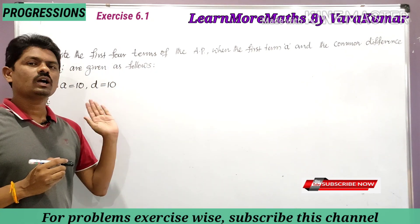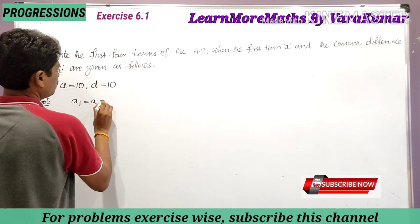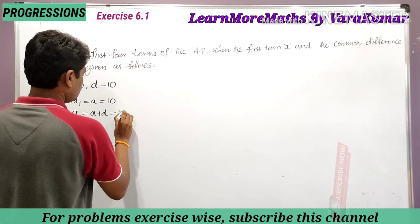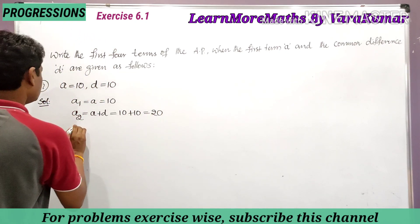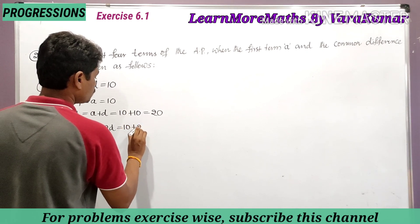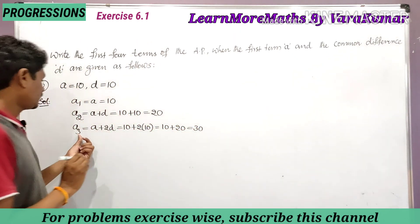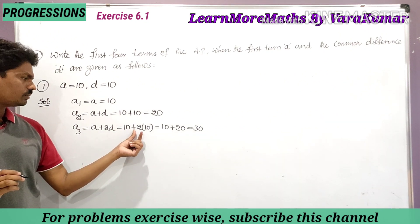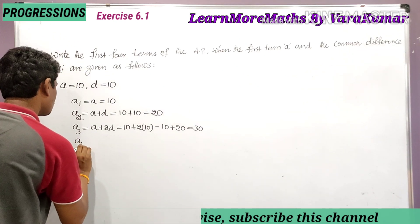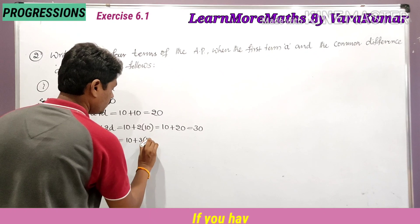The first four terms are a1, a2, a3, and a4. The first term a1 is equal to a, which is 10. The second term a2 is equal to a plus d, that is 10 plus 10, which is 20. The third term a3 is equal to a plus 2d, so 10 plus 2 into 10, which is 10 plus 20, equal to 30. The fourth term a4 is equal to a plus 3d, that is 10 plus 3 into 10.